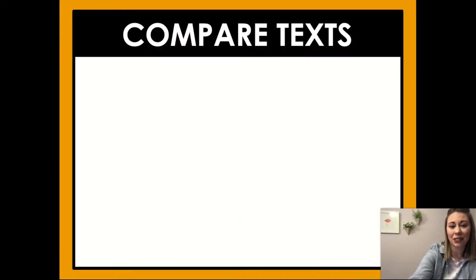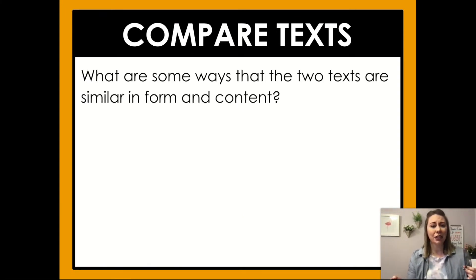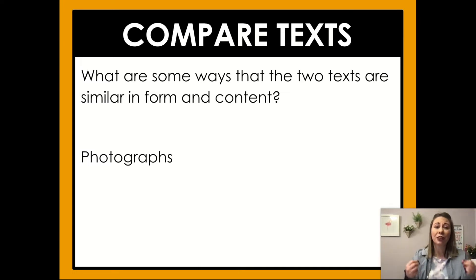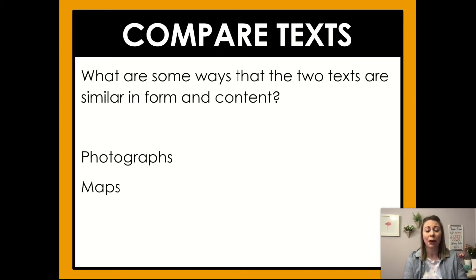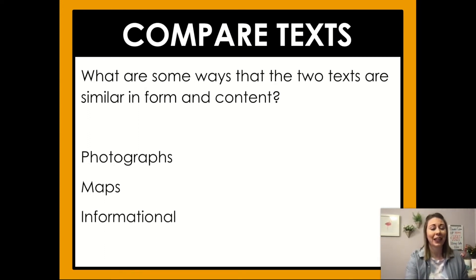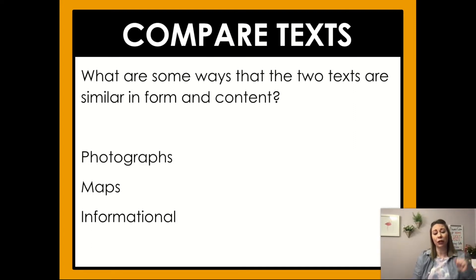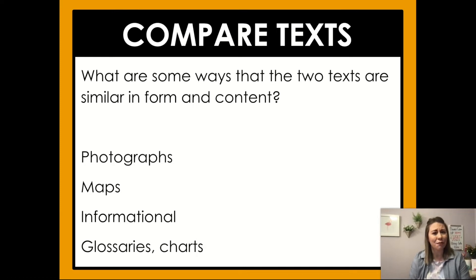We also have a real person this time, thinking about their experience. When thinking about how these texts are the same in form and content, both texts had photographs — pictures of real things. They both had maps, showing the world in different places. A Tsunami Unfolds really showed the map of where the tsunami took place. In content, they're both informational. Anatomy of a Volcanic Eruption gives information about all types of volcanoes, while A Tsunami Unfolds gives information about one specific event in history. They also both have glossaries with word definitions and charts.